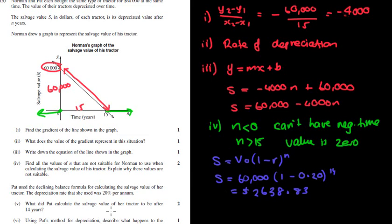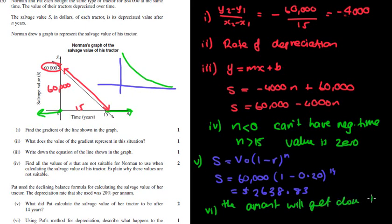Using Pat's method of depreciation, describe what happens to the salvage value of her tractor for all values greater than 15. Well, if you're thinking about the declining balance, it's like a curved line. And what you'll find that because you're, I guess you're finding percentage of an amount for each year, that every time you find a percentage of a percentage of a percentage of a percentage, that the amount will get closer to 0. So the amount will get close to 0. However, theoretically, it will not reach 0. It might get to like 0.0000004 cents, which is obviously for our purposes that it equals 0. But theoretically, it will never actually reach 0. It will get closer and closer and closer and closer to 0, but never actually touches it.